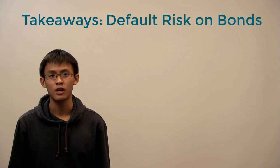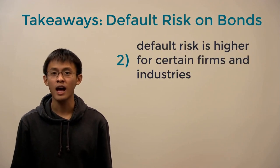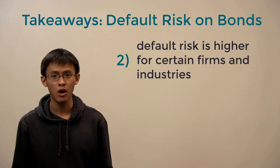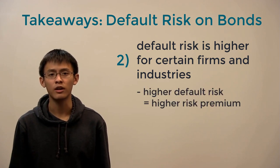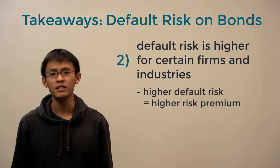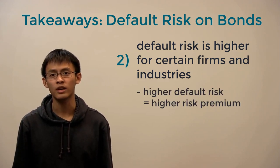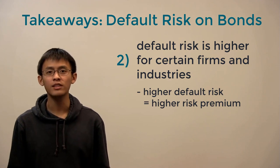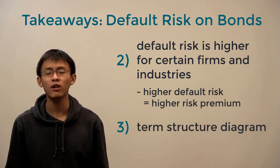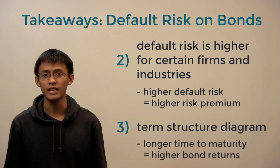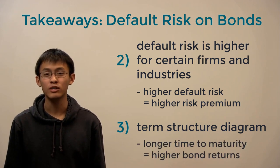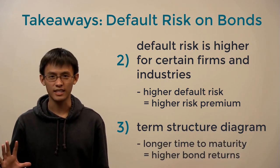Today we went over how bonds are affected by default risk. We learned that default risk is higher for certain bonds, and investors require an additional return called a default premium in exchange for holding these riskier investments. We can demonstrate how the return on default-free bonds increases as the time to maturity increases using a term structure plot. See you next time.